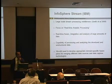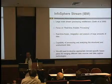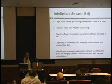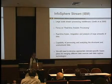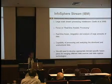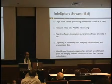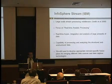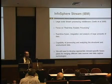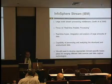IBM has developed a system called Ecosphere Stream. Ecosphere Stream is a large-scale stream-processing middleware. A Carnegie researcher is using this IBM middleware to integrate different sensing technologies and get data from different sensing technologies. The focus of this system is real-time analytic processing. It enables real-time fusion, integration, and analysis of large amounts of data — really large amounts of data — and it provides the capability of processing and analyzing both structured and unstructured data. Although it is a great tool, we still need to develop appropriate domain-specific fusion plans for merging different data sources.